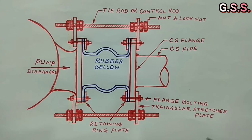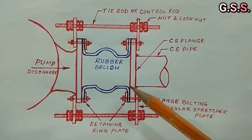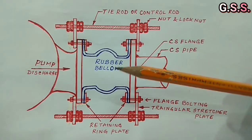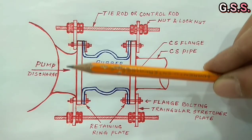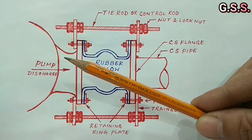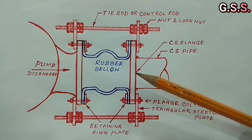So, to take care of this piping misalignment, we provide the rubber bellow. Rubber bellow is having flexibility in axial, lateral and angular direction and rubber bellow can take care of piping misalignment in any direction.